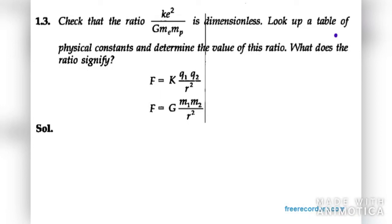Let's start with question number 13 of chapter 1, physics class 12. In this it says check that the ratio ke² over Gm_em_p is dimensionless. Look up a table of physical constants and determine the value of this ratio. What does the ratio signify?